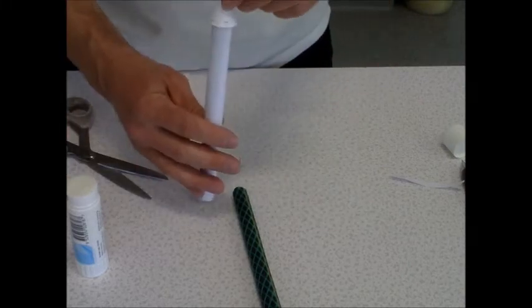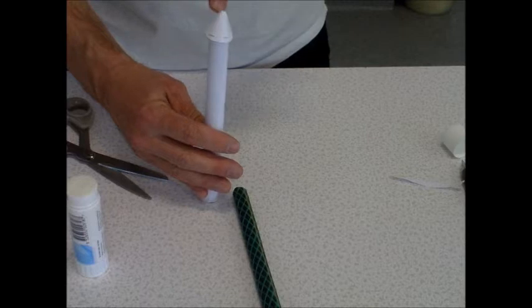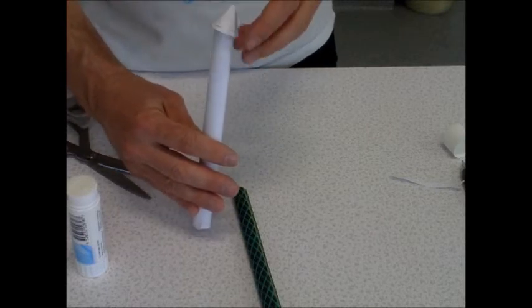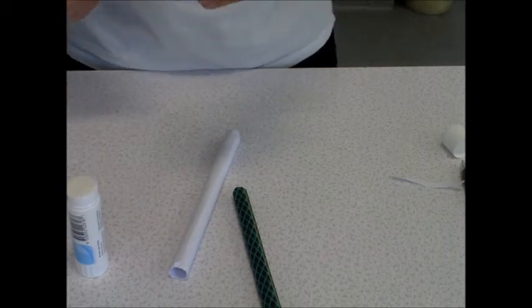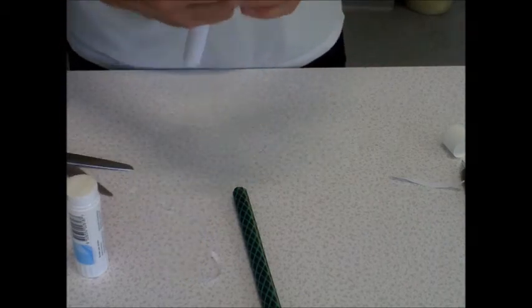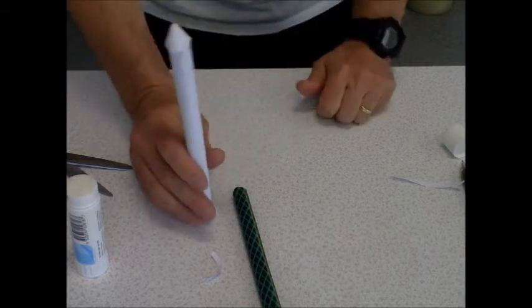Alright, you can see that the cone is a little bit too big for the rocket body. So I'm going to just trim some of this off. So there's my nose cone.